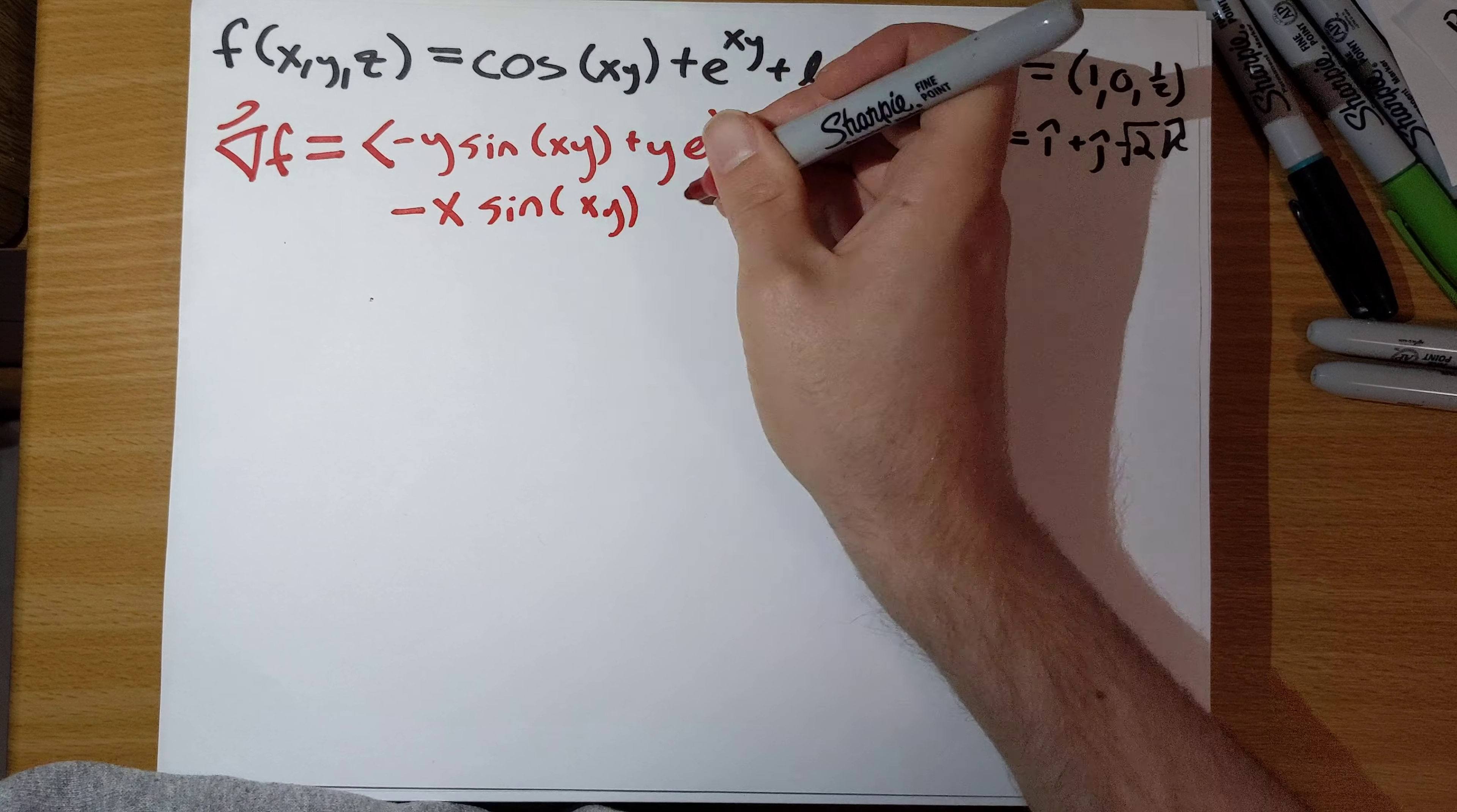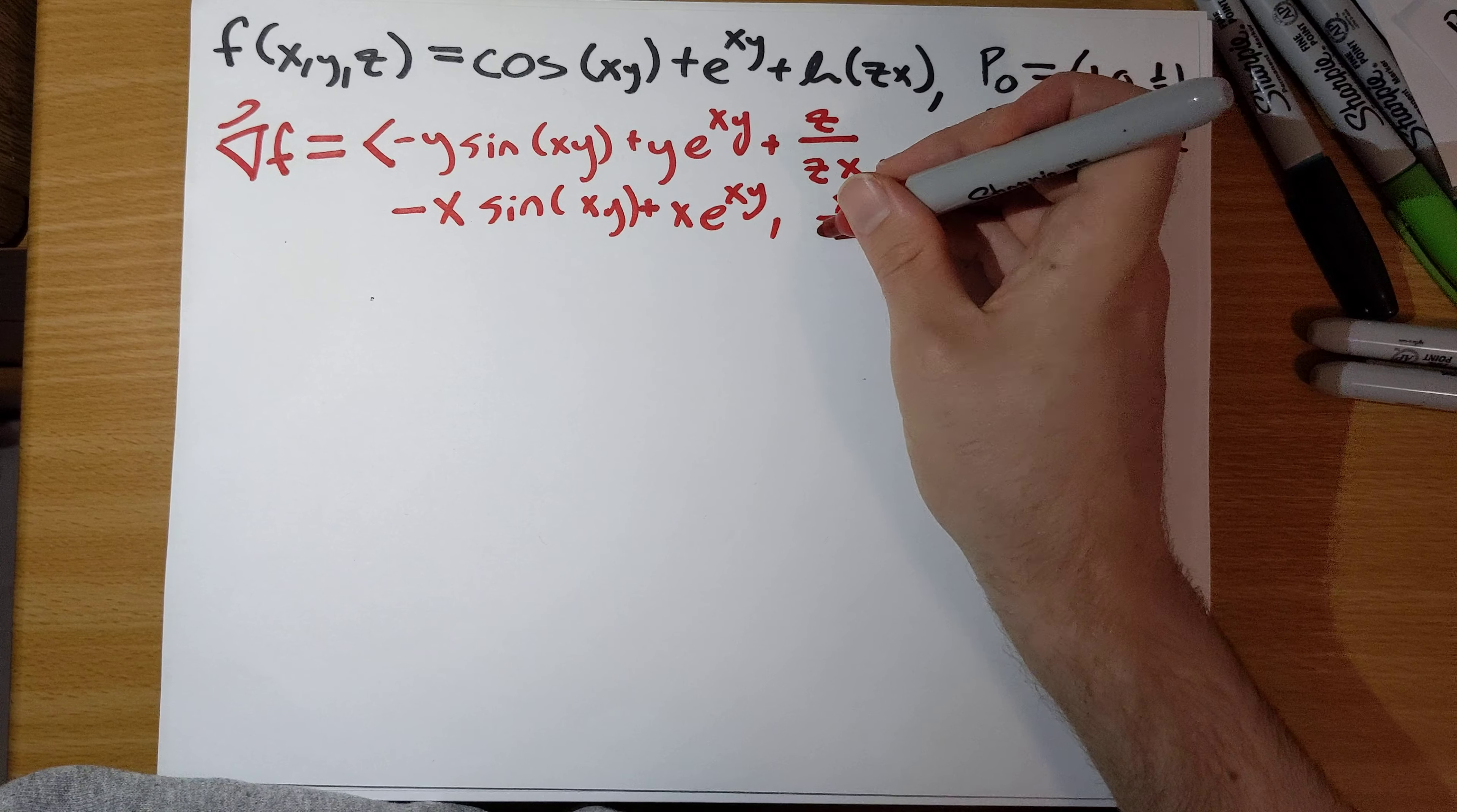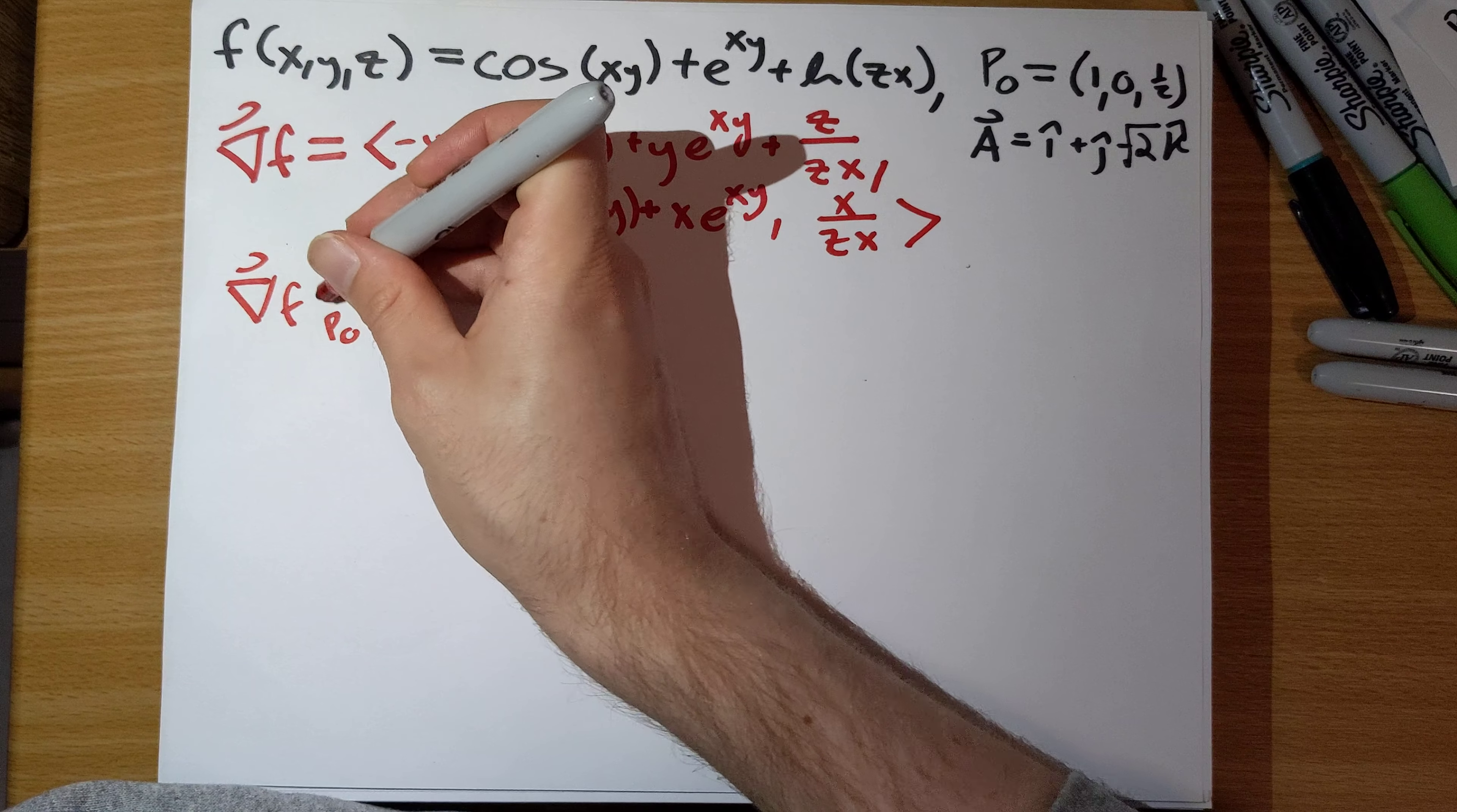The y partial derivative is negative x sine of xy plus xe to the xy. And the z partial derivative is just going to be x over z times x.